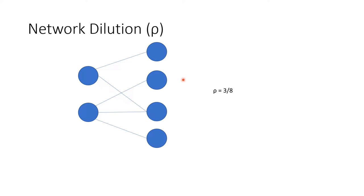But in this case, how do we calculate rho? It's a ratio where the denominator is all possible connections in the network — each of the two neurons can connect to four, giving eight total — and the numerator is the number of missing connections. Here, one neuron is not connected to two, and the other is not connected to one, giving three missing connections. So rho equals three over eight.